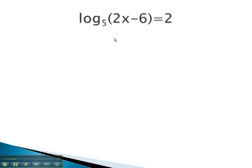The base here, in log base 5 of 2x minus 6 equals 2, is a base of 5. The exponent is always what the log equals, or 2, equals what's inside the log, the 2x minus 6.